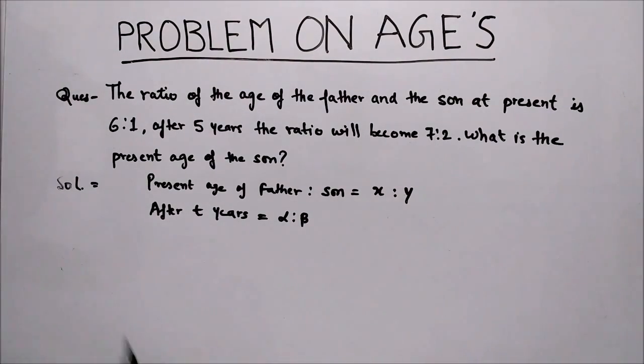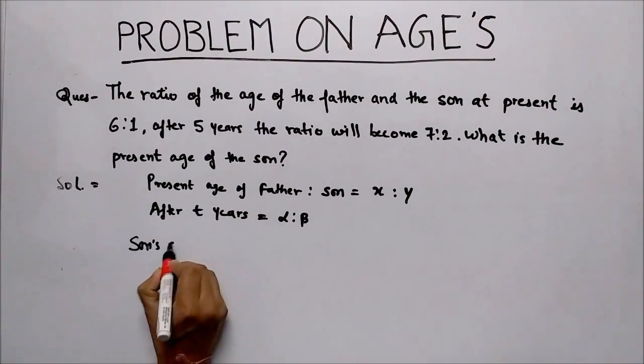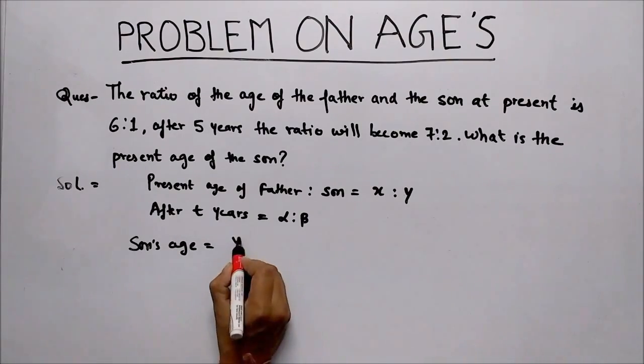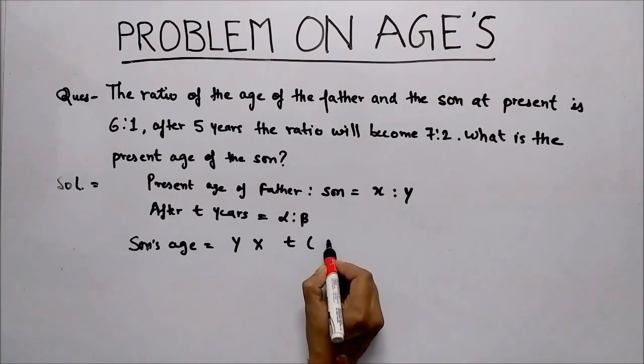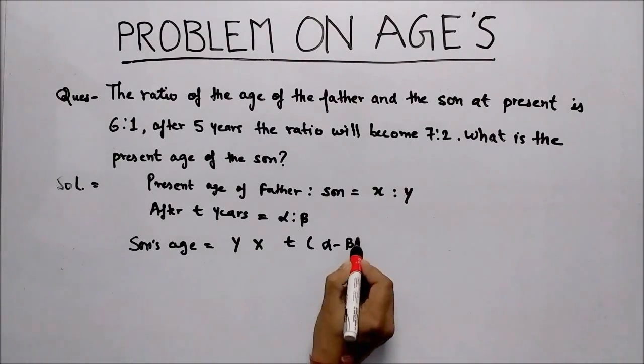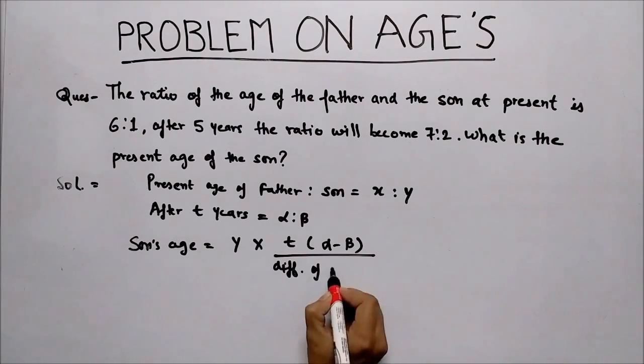We have a dedicated formula: son's age equals y times t times (alpha minus beta) upon difference of cross product.